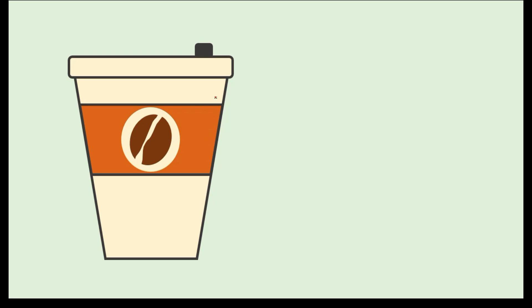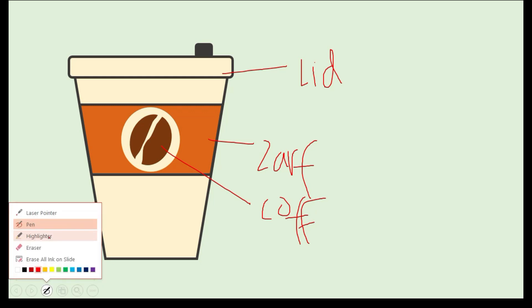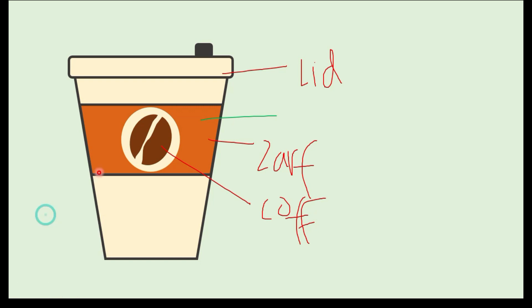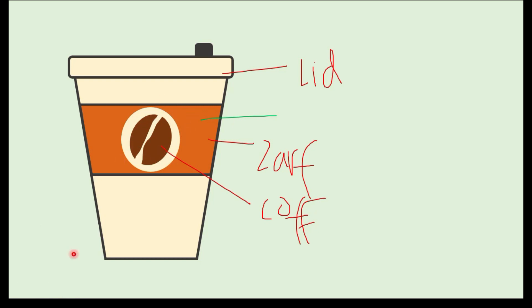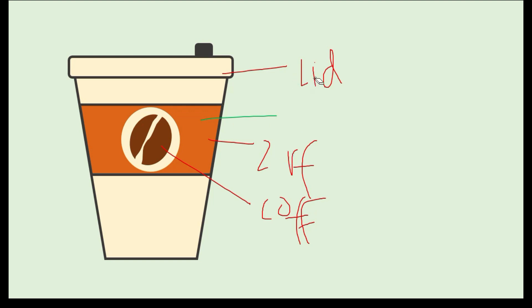For example, I want to label: this is the lid, this is the zarf, and this is the coffee bin. If you are teaching a diagram or trying to point out parts of your concept, the Pen Tool would be a really great feature. By the way, we can also change the color of our pen — we can make it green or several other colors. Let's try the Laser Pointer, which you can also use while presenting. And if we made a mistake, we can easily erase our writings by clicking the Eraser.